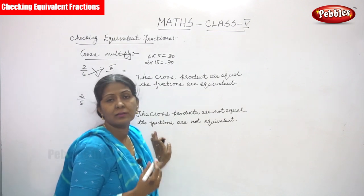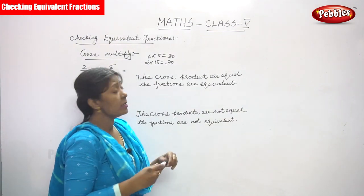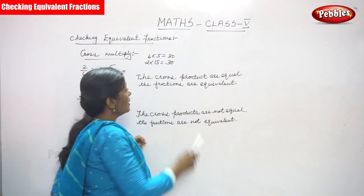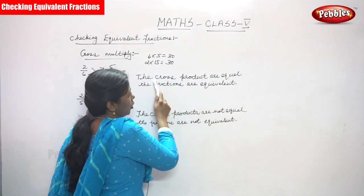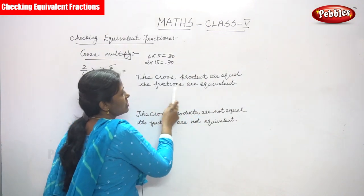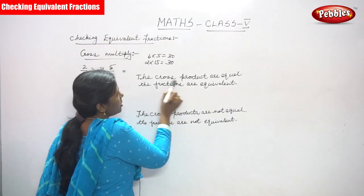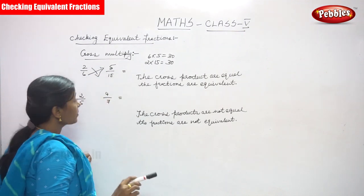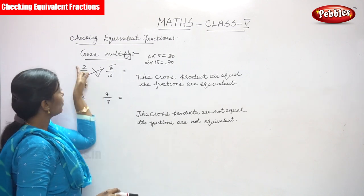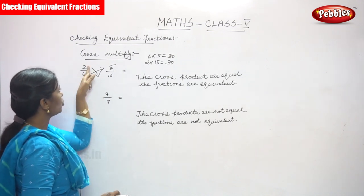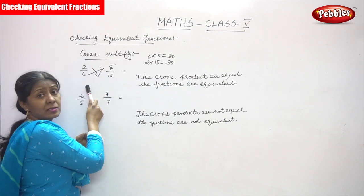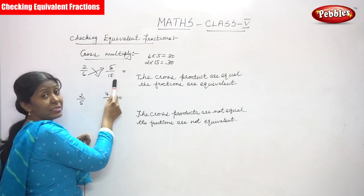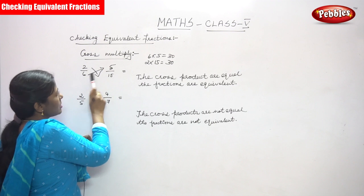The answer is the same — the cross products are equal, so the fractions are equivalent. In the fraction 2 by 6, 2 is the numerator and 6 is the denominator. In the next fraction 5 by 15, 5 is the numerator and 15 is the denominator. So 6 into 5 is a cross multiplication.